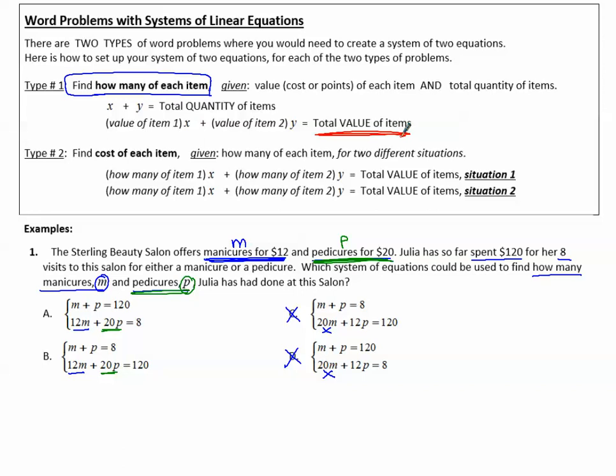Then it equals the total value of the items. Well, the total value is, in this case, the money. Here's money, here's money, and this is her total amount of money. So we need to see all the money numbers together adding up to that total amount of money.